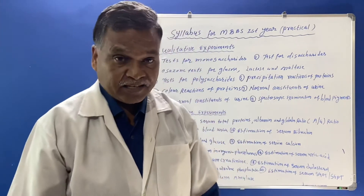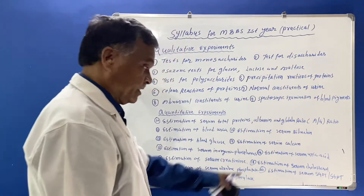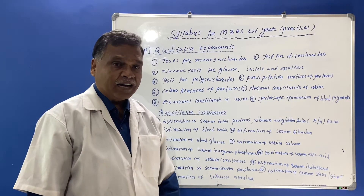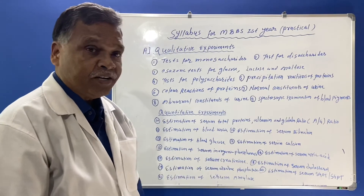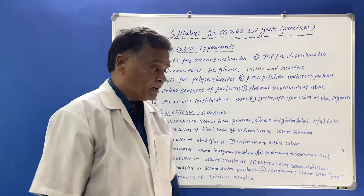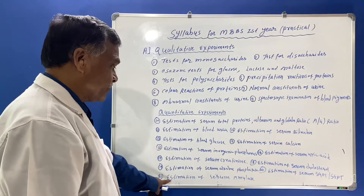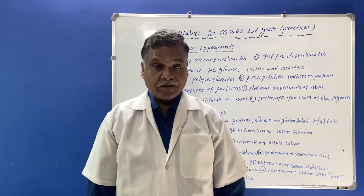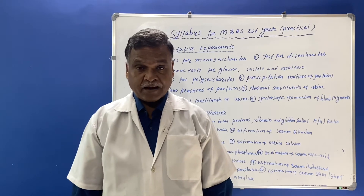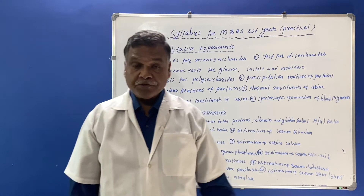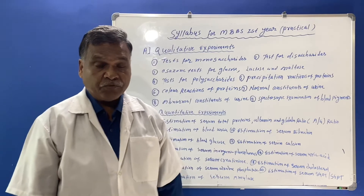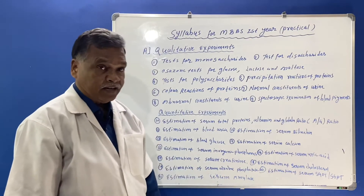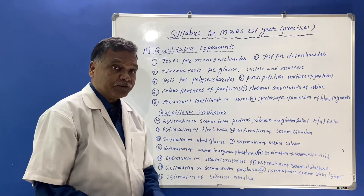Generally SGOT is found in elevated levels in cardiac disease, and SGPT is found in elevated levels in liver diseases. Then estimation of serum amylase is also one of the important parameters to find out in the laboratory. This parameter is related to the pancreas — if levels are increased, pancreatic disease can occur in the body.